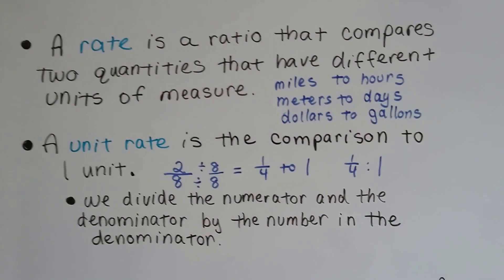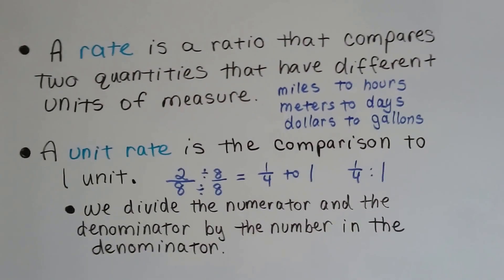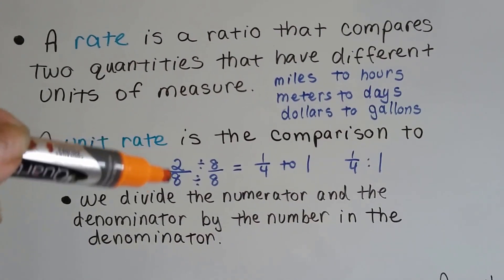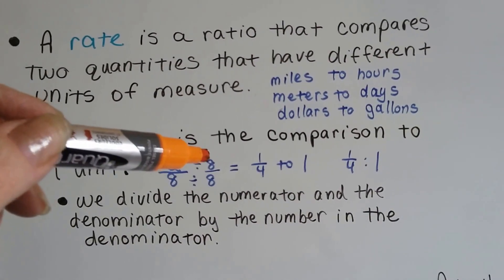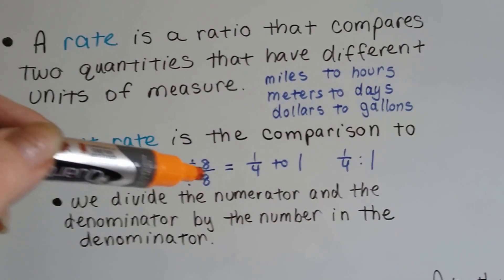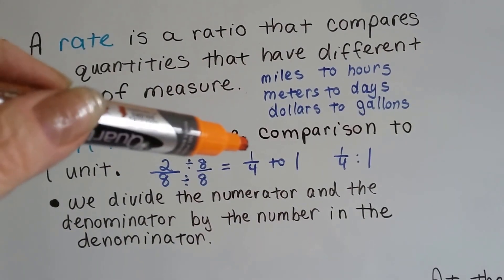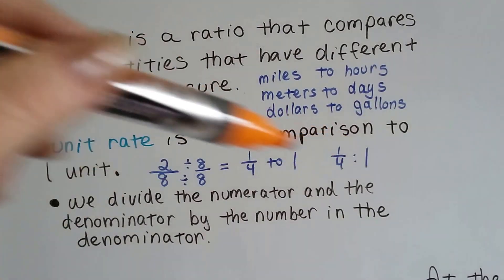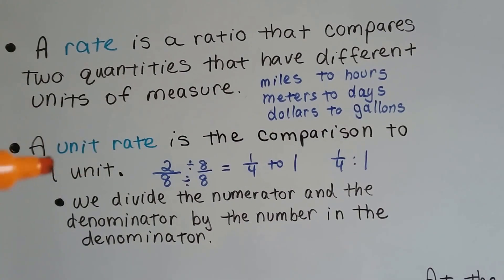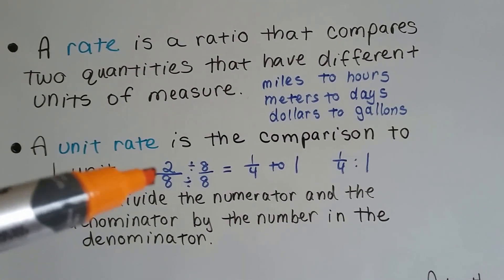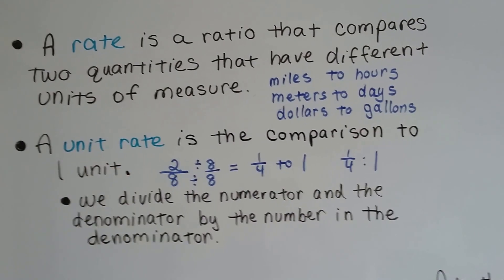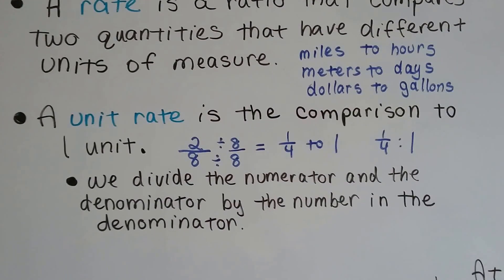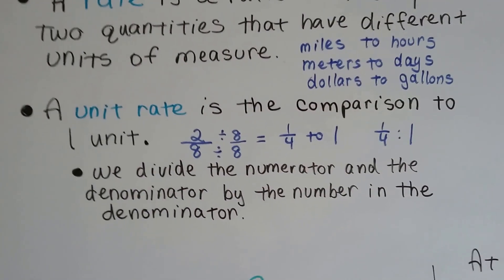A unit rate is the comparison to one unit. For example, 2 over 8: we divide the 2 by 8 and the 8 by 8 and get 1 fourth to 1. We divide the numerator and the denominator by the number in the denominator, and it tells us the unit rate — the PER.